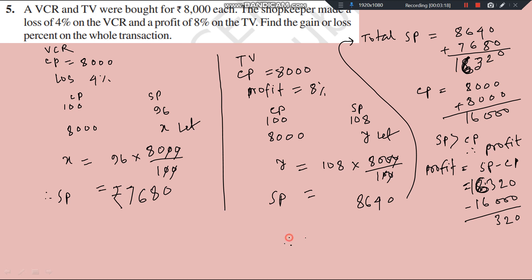Therefore, gain or profit percent equal to gain by CP into 100. So, gain is 320 by CP is equal to 16,000 into 100. This, this cancel. 1, 0 also cancel. 16 to 32. So, answer is 2%. 2% is the answer. Gain percent equal to 2 actually. You write 2. Or you can write gain equal to 2%. 2% that is the answer.